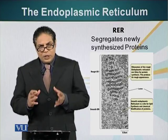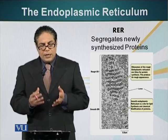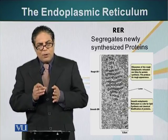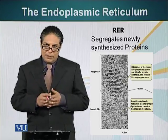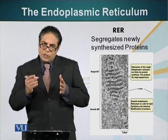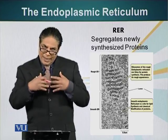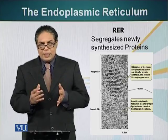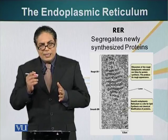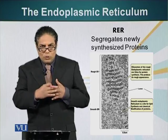Rough endoplasmic reticulum is called rough because when people first observed it under the microscope, it seemed very rough. It seemed rough because ribosomes are attached to it. As you saw in our animation, ribosomes making proteins destined for the lysosome or for secretion dock at a special place on the rough endoplasmic reticulum and inject that protein directly into the space between those two membranes.